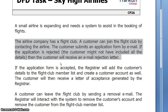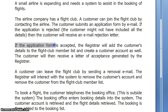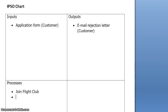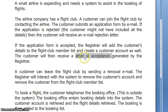So we've completed the first paragraph, let's look at the next. If the application form is accepted, the registrar will add the customer's details to the flight club member list and create a customer account. The customer will then receive a letter of acceptance generated by the registrar. So we've got a process taking place in the middle here where it's verifying the customer's application form — it's either going to accept it or not. And we did notice that they will receive a letter of acceptance, so there we have an output.